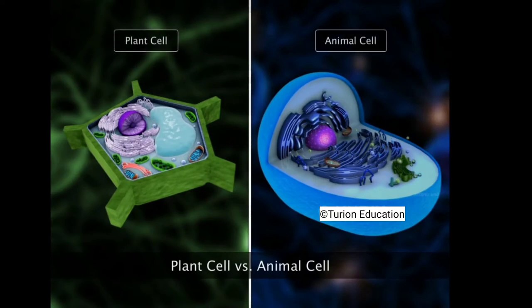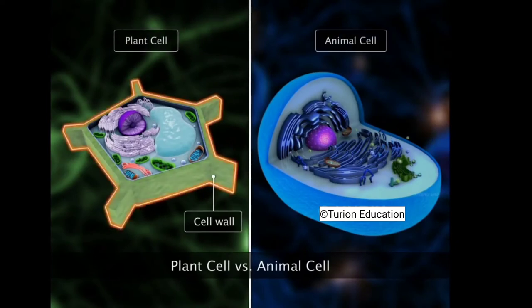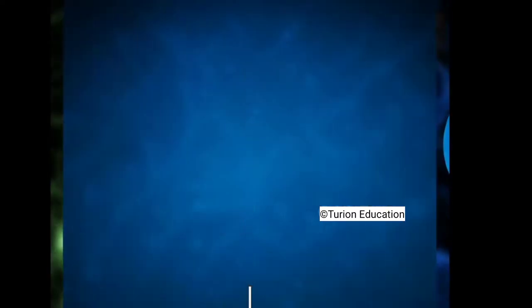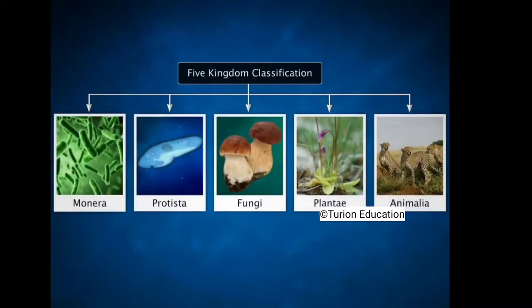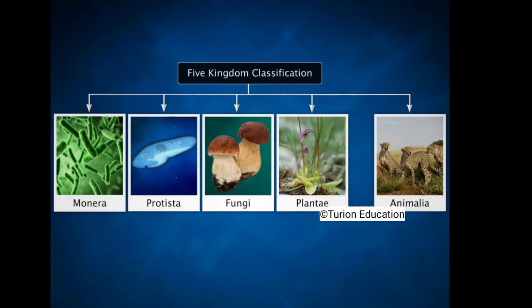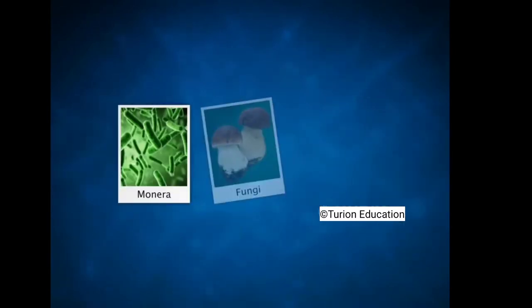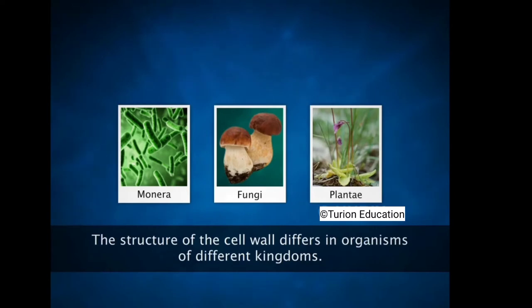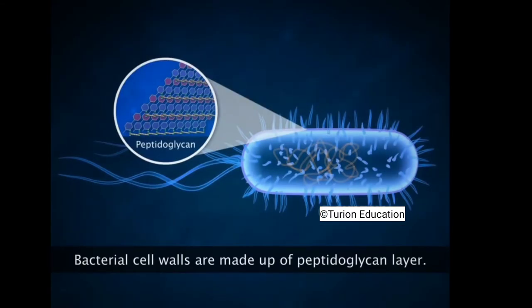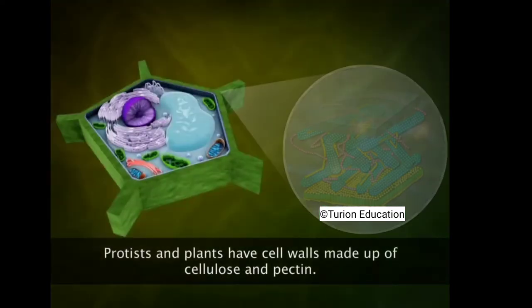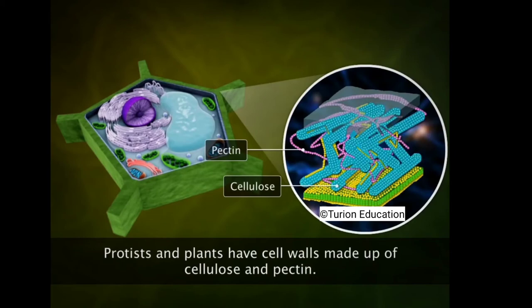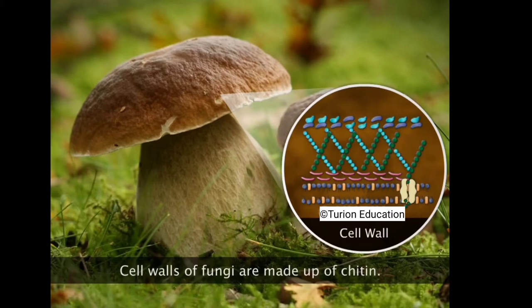Plant cells possess cell walls, which animal cells lack. In the five-kingdom classification, Kingdom Monera, some protists, fungi, and plants show the presence of a cell wall, while animal cells lack cell walls. The structure of the cell wall differs across kingdoms: monerans such as bacteria have cell walls made of a polymer of sugars and amino acids called peptidoglycan. Protists and plants have cell walls made of cellulose and pectin. Fungi cell walls lack cellulose and are instead made of chitin.